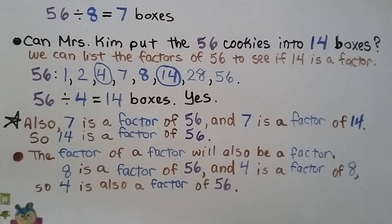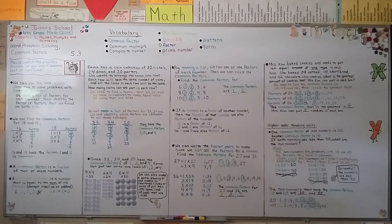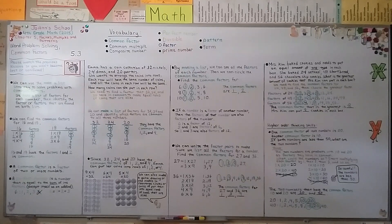It can seem confusing — if you need to rewatch that, that's okay. To find common factors, just make a list of all the factors for each number and circle the ones they have in common. Our next lesson, 5.4, will be about factors and multiples and how they're related. Remember to try to be a better person than you were yesterday. Have a great day, bye!